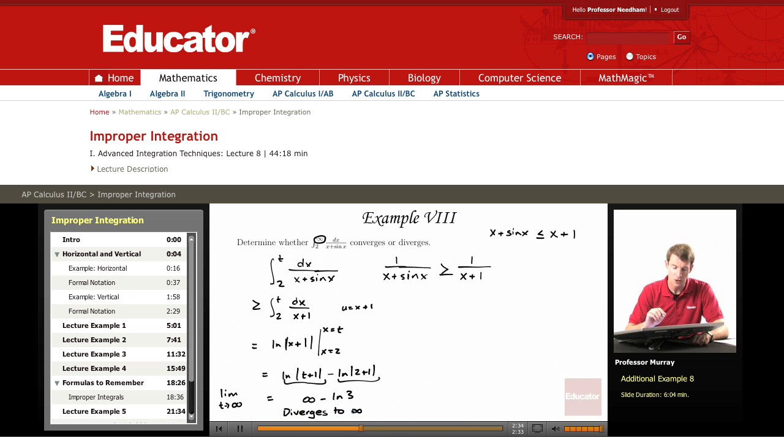However, that was the integral of dx over x plus 1. We're actually trying to look at the integral of dx over x plus sine x. What we have learned, though, is that the integral from 2 to infinity of dx over x plus sine x is bigger than or equal to the integral from 2 to infinity of dx over x plus 1.